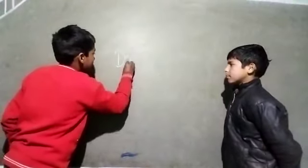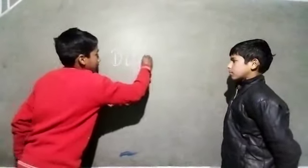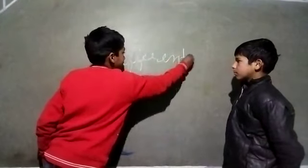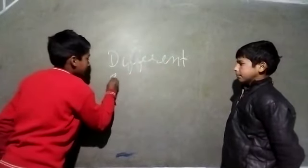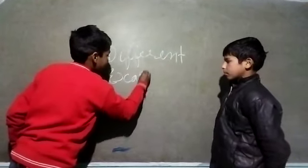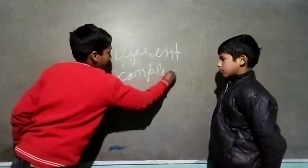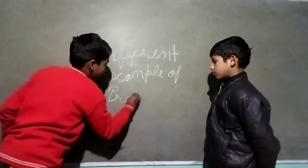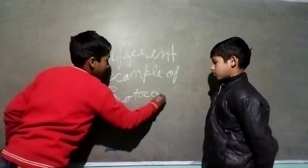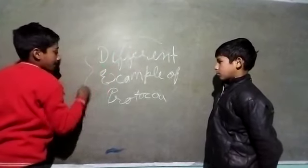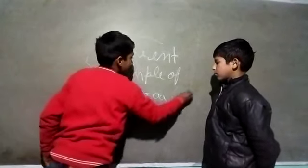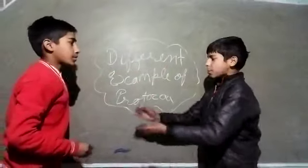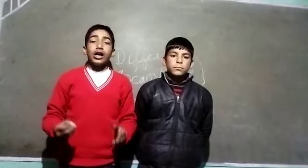Let's start. Different — D-I-F-F-E-R-E-N-T. Example — E-X-A-M-P-L-E. Example of Protozoa — P-R-O-T-O-Z-O-A. Ishmith, what is Protozoa? Protozoa are unicellular animals.